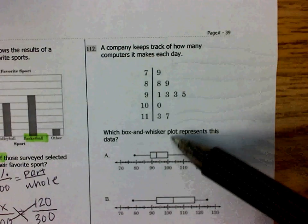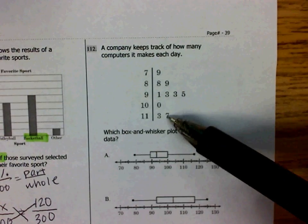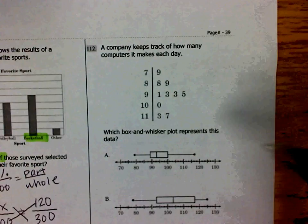Today, we're going to look at a stem and leaf plot, and we're going to use the stem and leaf plot to help us find a box and whisker plot.